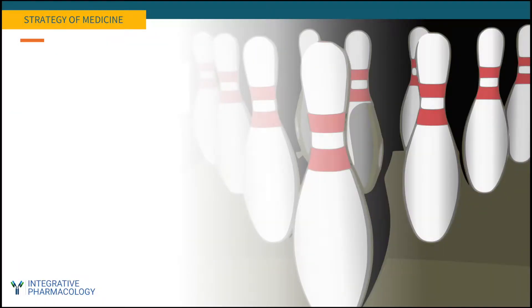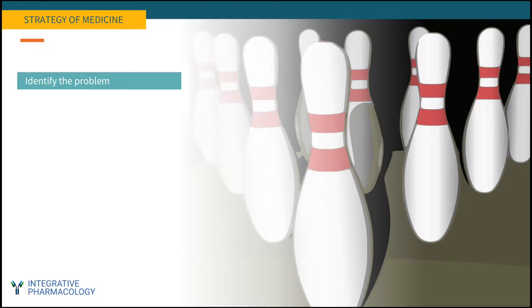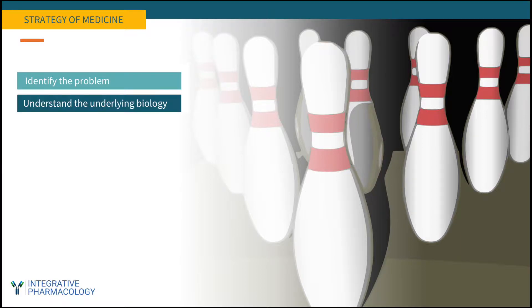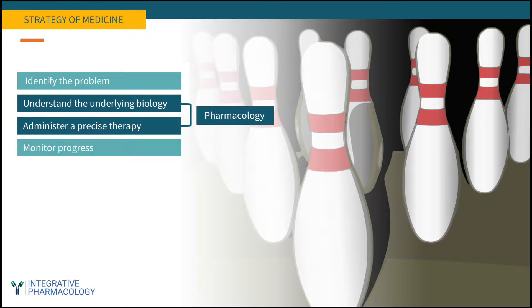Many of you have different medical backgrounds and different areas of professional focus. But regardless of these differences, we can all agree on the goal of preventing or treating disease. The strategy of medicine can be summarized in four steps: identify what's going on — that's the realm of diagnostic medicine — then understand the underlying biology, and match that to administer a precise therapy. These two steps are collectively the domain of pharmacology.